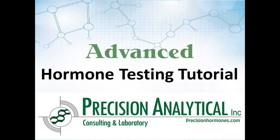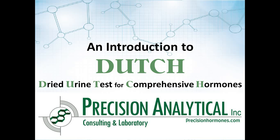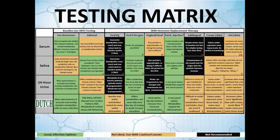Welcome to our advanced hormone testing tutorial. In this video series we're going to take you through a number of topics that will assist your decision making when it comes to testing hormones. In this first video we're going to go through an introduction to our hormone testing — a dried urine test for comprehensive hormones that we call Dutch — and discuss the pros and cons of serum testing, saliva testing, traditional urine testing, and dried urine testing to avoid clinically misleading information.